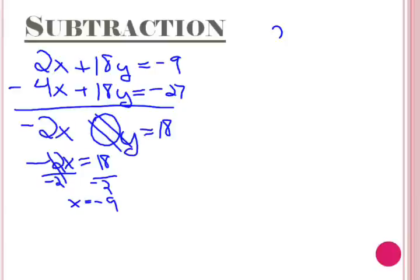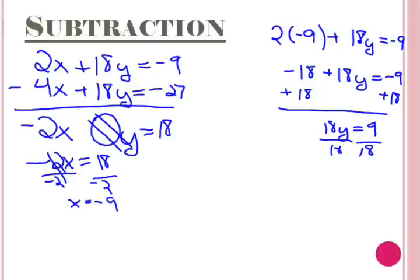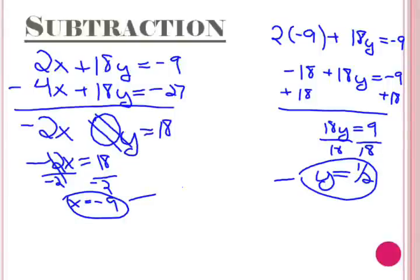Now we have to solve for y. We need to replace x in one of the equations with negative 9 — let's use the first equation: 2 times negative 9 plus 18y equals negative 9. 2 times negative 9 equals negative 18, so we need to add 18 to each side. Once we have 18y equals 9, we can divide each side by 18 to get y by itself. We then find that y equals 1 half. So the solution is (negative 9, 1 half).